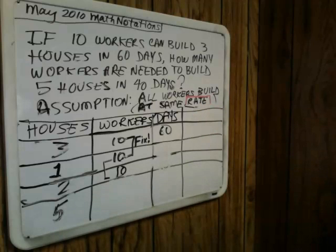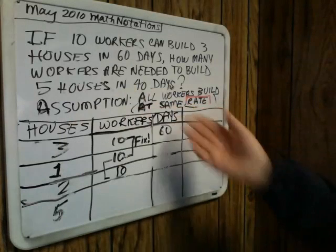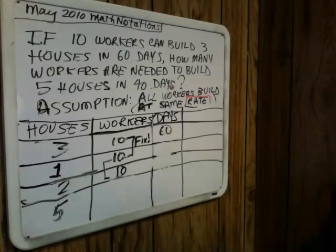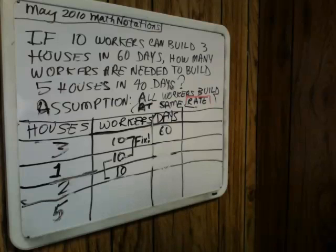We'll come back to that if time permits. There are advanced methods to be brought to this question. I have some highly sophisticated readers of this blog and YouTube channel who know how to use variation, who can express a relationship among houses, workers, and days, like H equals KWD. They could also set it up using factor label methods, conversion factors — all the different names used in math and science classes for dimensional analysis.